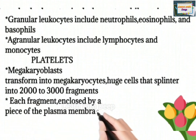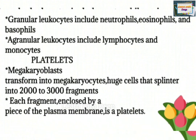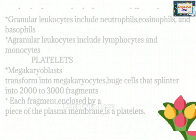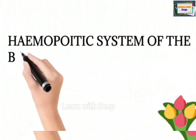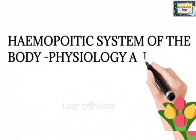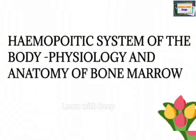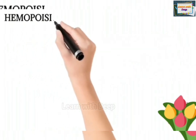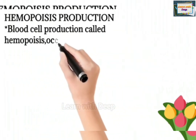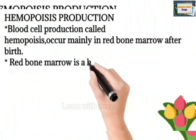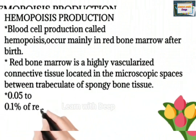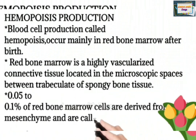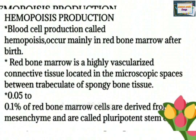Platelets are formed when megakaryoblasts transform into megakaryocytes — huge cells that splinter into 2,000 to 3,000 fragments. Each fragment enclosed by a piece of plasma membrane is a protoplatelet. Blood cell production, called hemopoiesis, occurs mainly in red bone marrow after birth. Red bone marrow is highly vascular connective tissue located in the microscopic spaces between the trabeculae of spongy bone tissue.